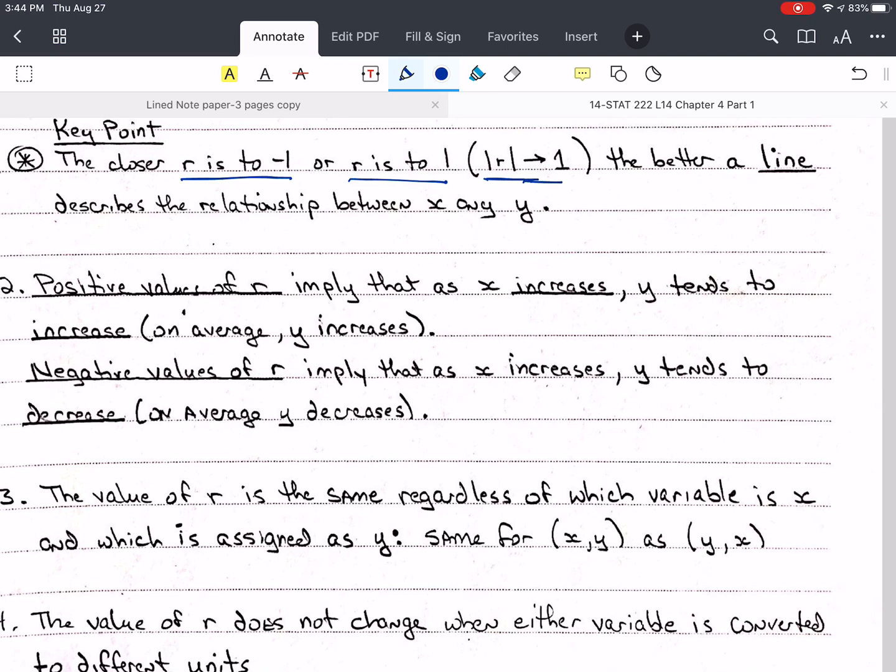Positive values for r imply that as x increases, y tends to increase. In other words, on average, y increases. Negative values of r imply that as x increases, we always talk about x increasing, y tends to now decrease, or on average, y decreases.